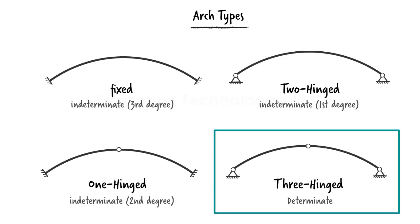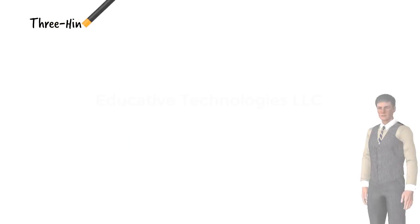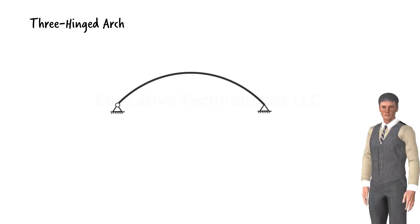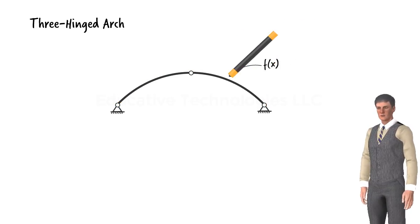Here we are going to focus on the analysis of a three-hinged arch. In order to analyze such a structure, we need to be able to define its shape using a mathematical function, often either as a circle or as a parabola.